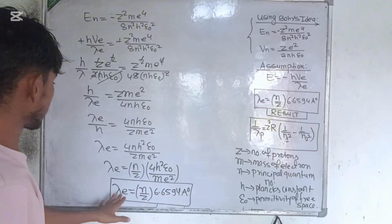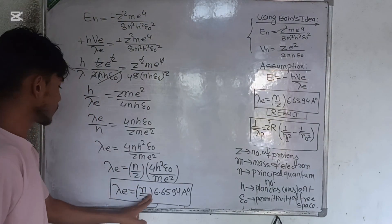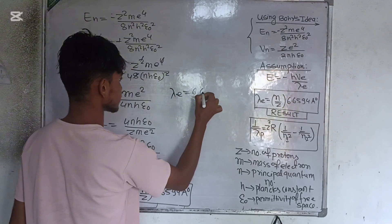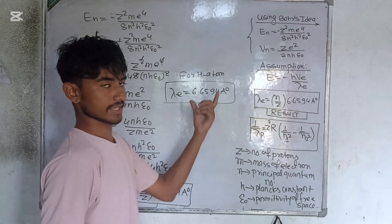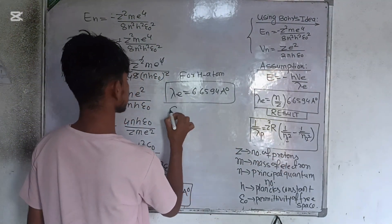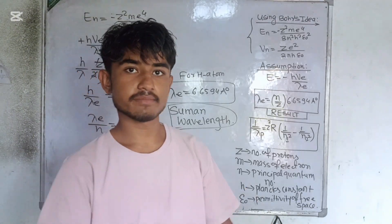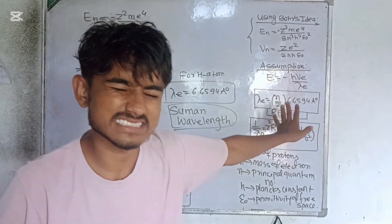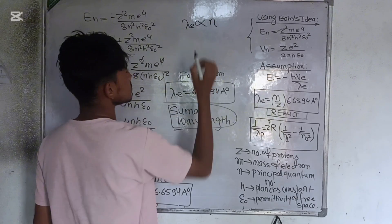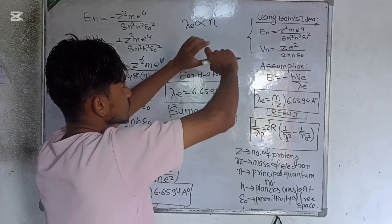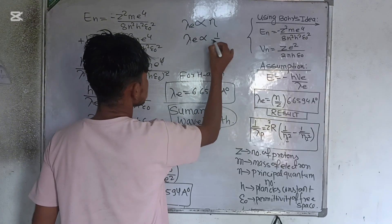So the wavelength of an electron with energy E can be represented as λ_e = (n/Z) × 6.6594 Å. For the hydrogen atom, n = 1 and Z = 1, giving λ_e = 6.6594 Å. This is the minimum possible wavelength — let us call this Suman's wavelength, since scientists name results after themselves. The wavelength of the electron is directly proportional to the principal quantum number n: the larger the orbit, the larger the wavelength.